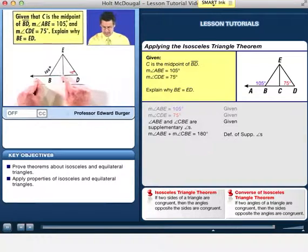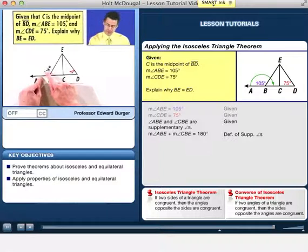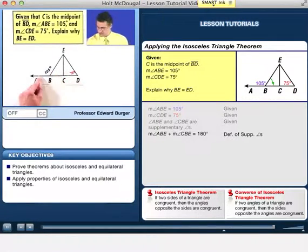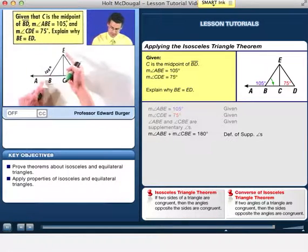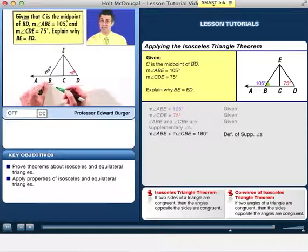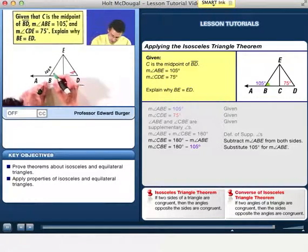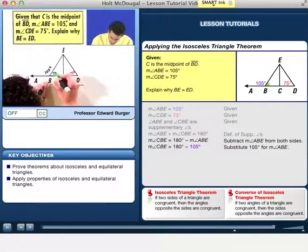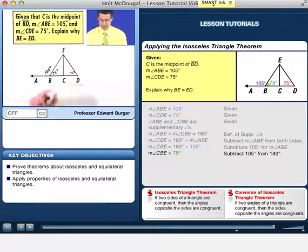So therefore, if I take 180 degrees and subtract off the 105 degrees, that will tell me exactly what the measure of this little angle EBC is. And so if we take 180 and subtract 105, we see 75 degrees for the measure of that little angle right there.